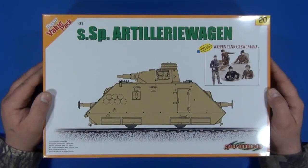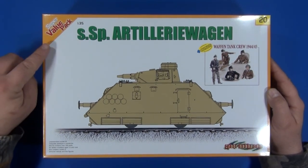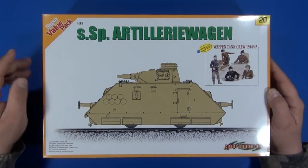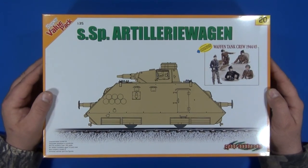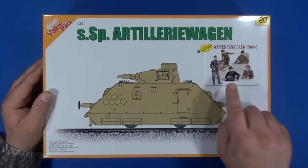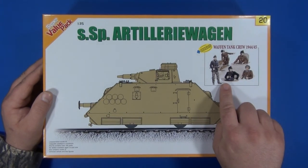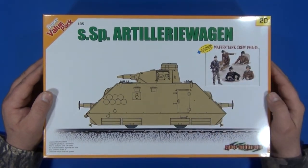Up for review today, the self-propelled artillery wagon from Dragon Cyber Hobby. It's from their orange box super value pack, kit number 9120. The kit contains over 180 parts and includes five Waffen tank crew 1944-45 bonus figures. Let's check it out.